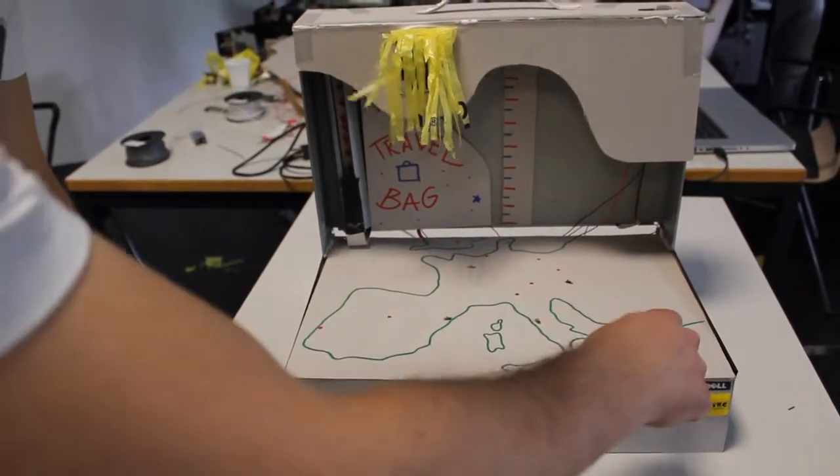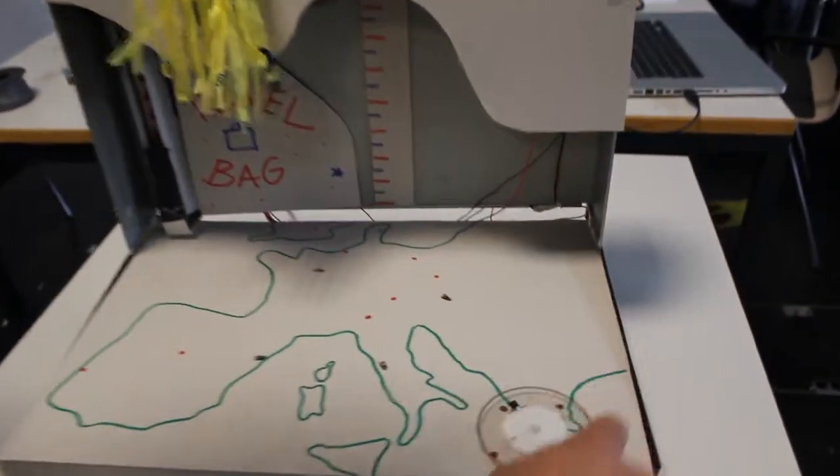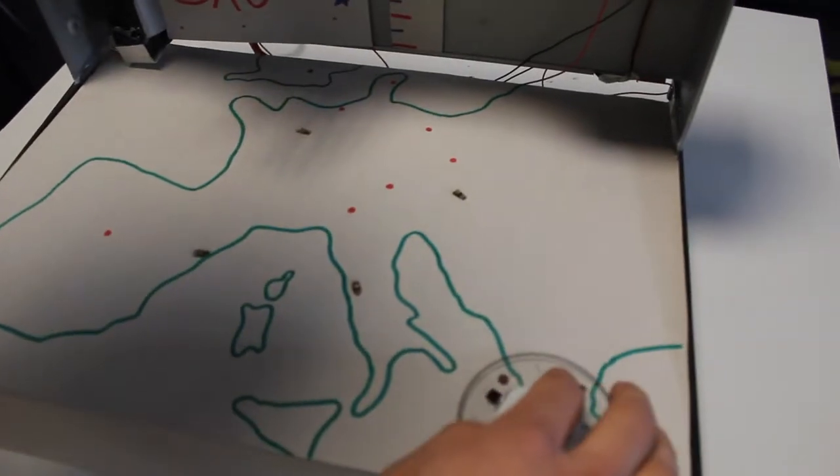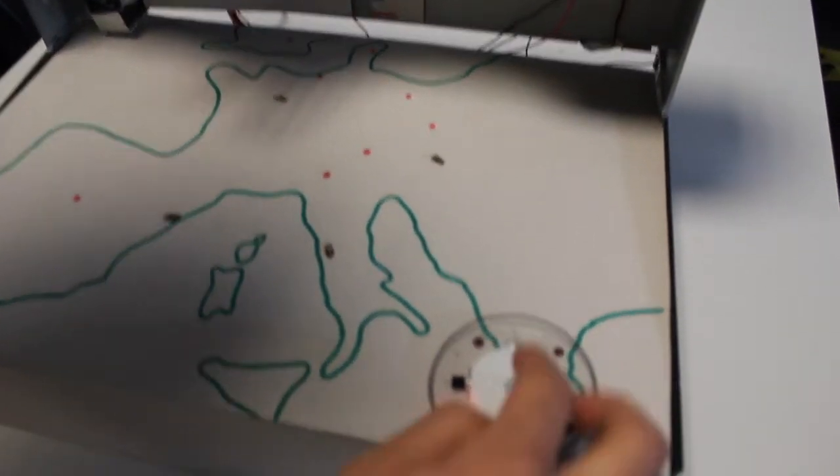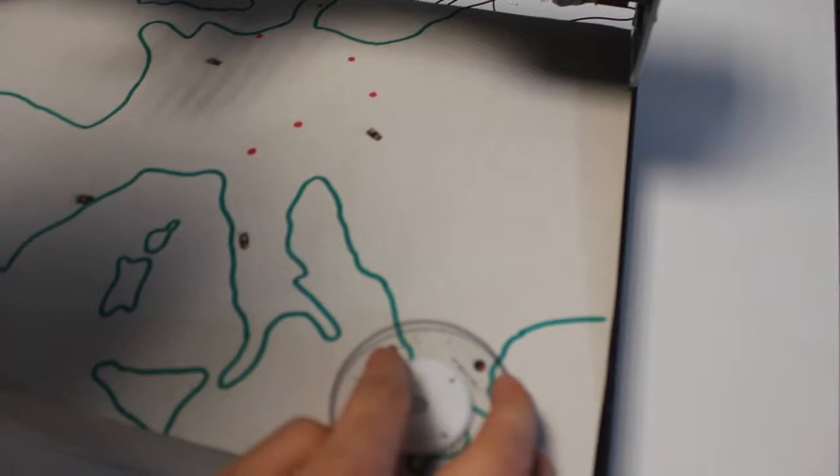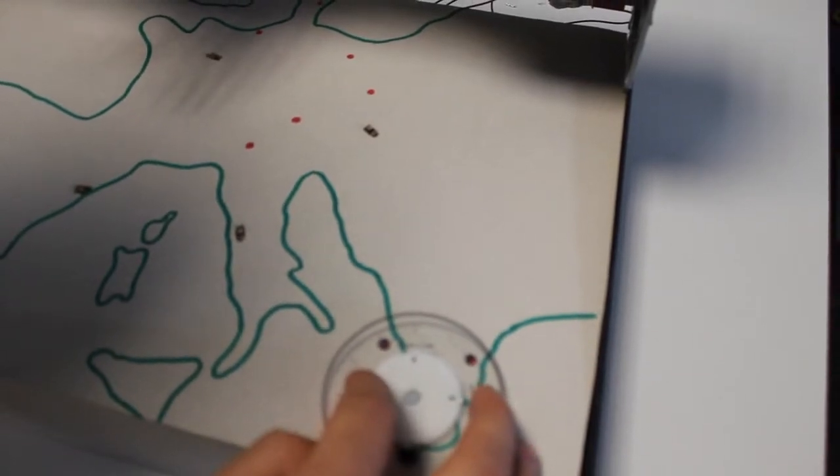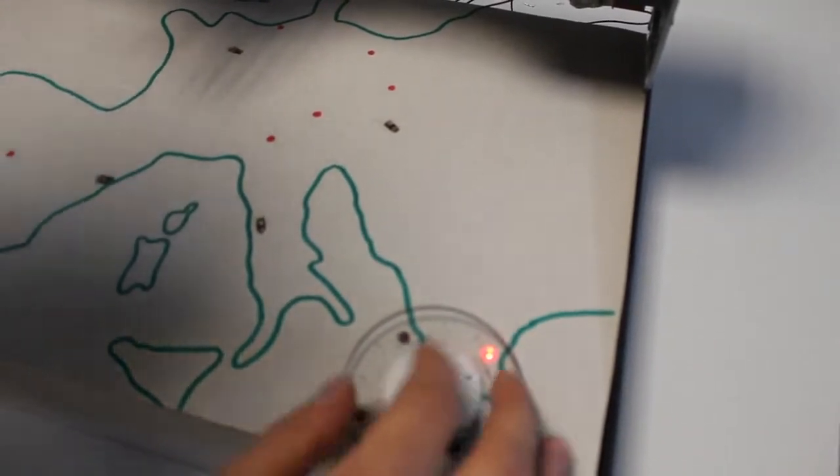So you choose the weekend here, you have the four next weekends. So if you rotate this wheel, you can choose the weekend, the first one, the third one.